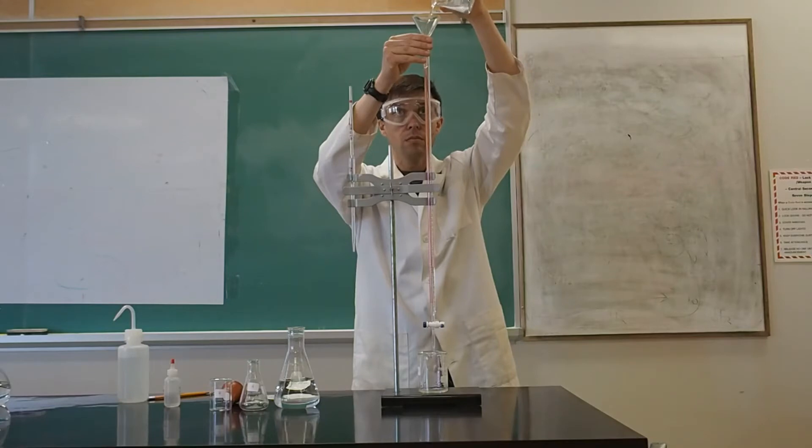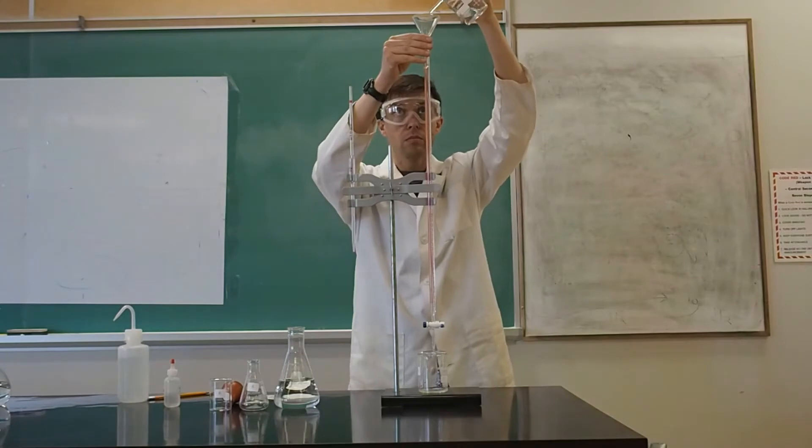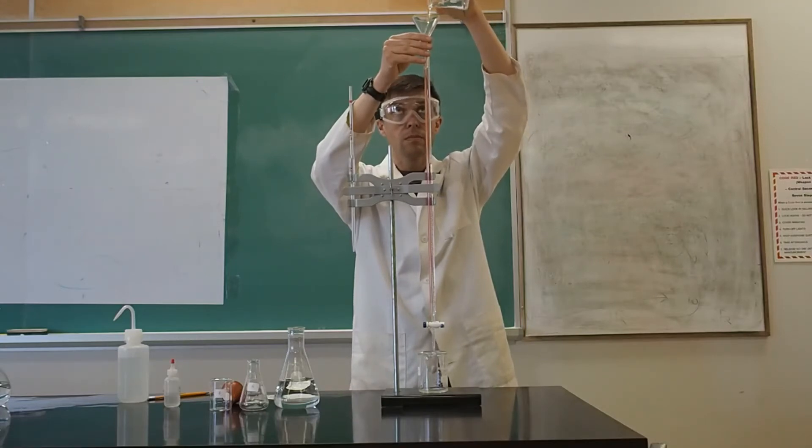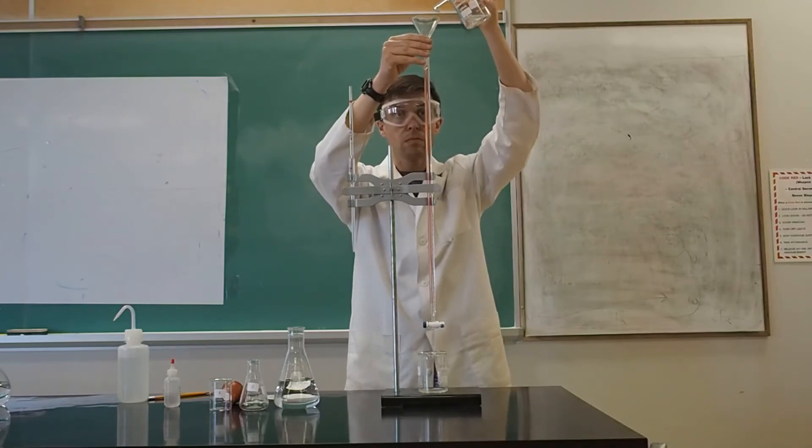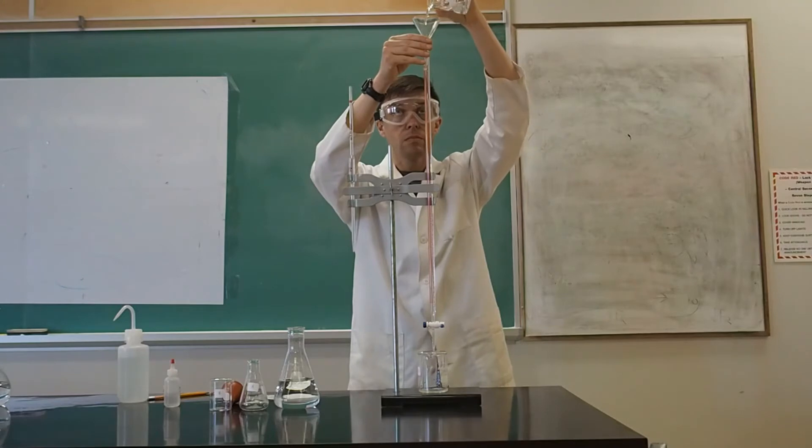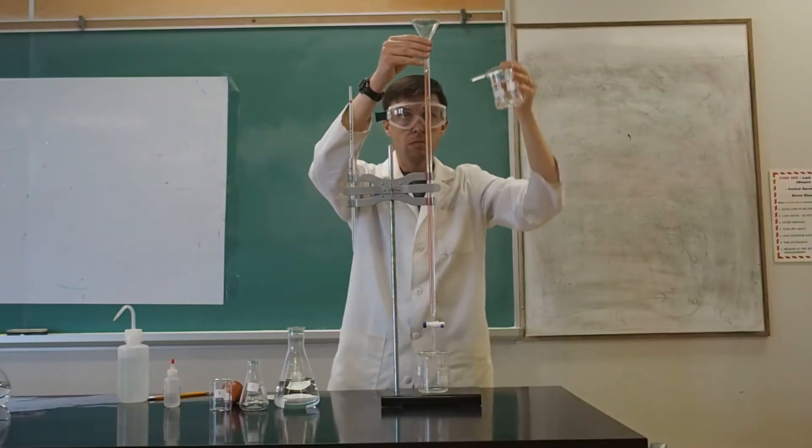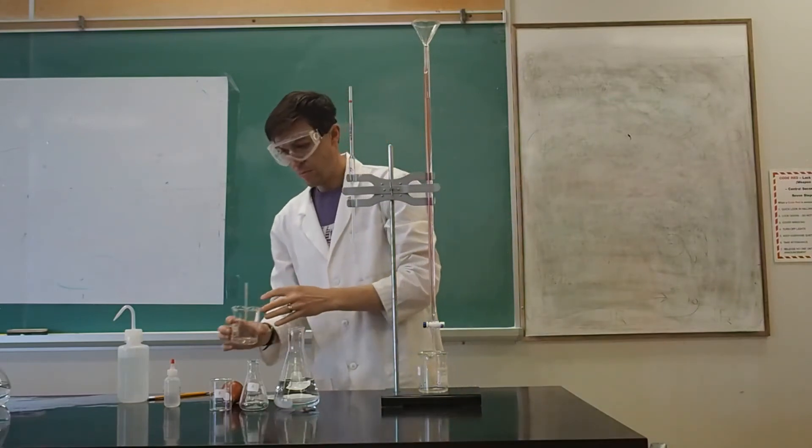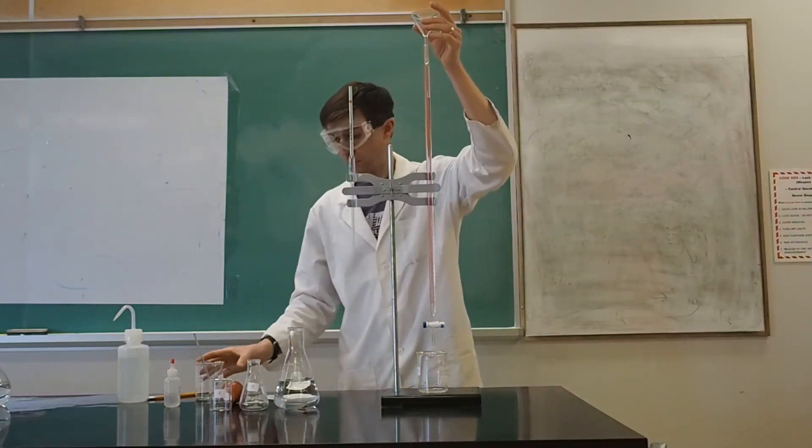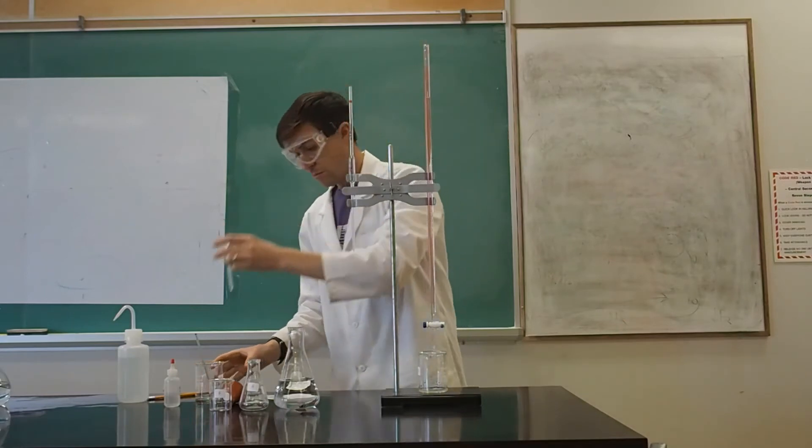Now fill the burette with the titrant. Pour a small amount at a time. You should fill the burette as close to the top as possible without going over the highest fill line, as this will waste your solution. However, do not waste time trying to fill exactly to the 0 mL marker. All that matters is that you record the precise starting volume measurement. When you are done filling, remove the funnel and store it in the beaker containing the titrant.